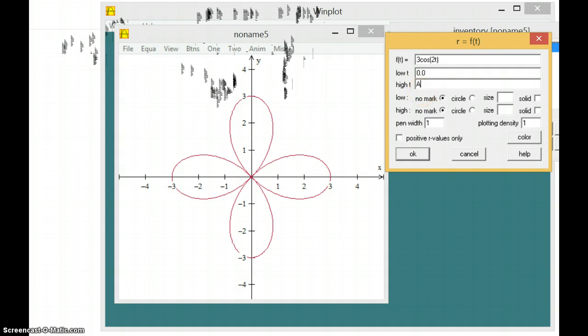But it doesn't like going from 0 to 0. So we're going to do 0 plus 0.001, some small increment. OK, say OK to that.